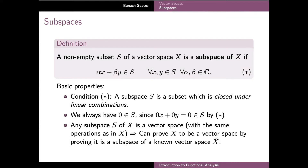As another basic property, a subspace always contains the zero element of the vector space X. This is easy to see from condition star by simply choosing the scalars alpha and beta both equal to zero. This is why often the best way to begin proving that some set is a subspace is to show that it contains the zero element, confirming it is not empty. Conversely, showing that the zero element is not in a set is a convenient way to show that a given set is not a subspace at all.